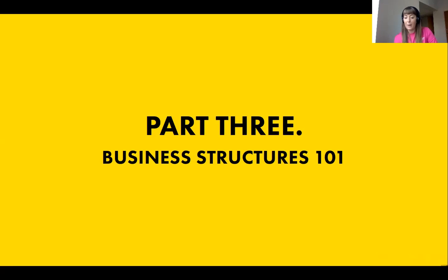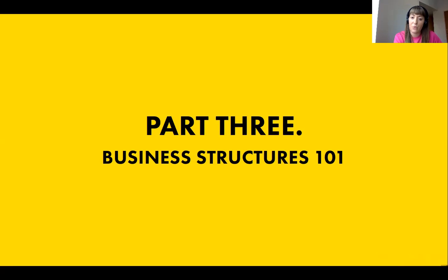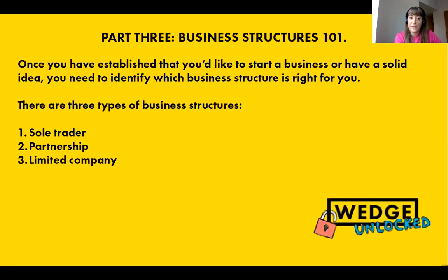So part three is all about business structures. Once you've established whether you'd like to start a business and have an idea of what you want to do, you need to think about what business structure is right for you. These basically refer to what you'd register the business as and what you trade under. There are three types of business structures we're going to go into: number one is a sole trader, number two is a partnership, and number three is a limited company.